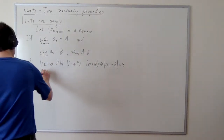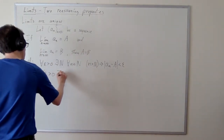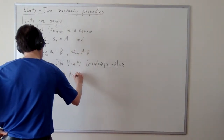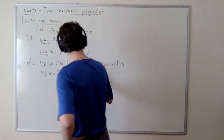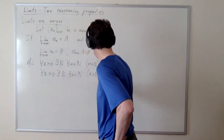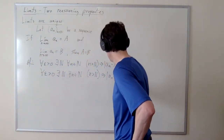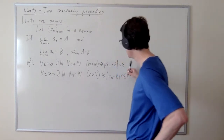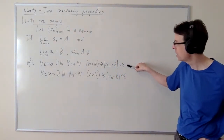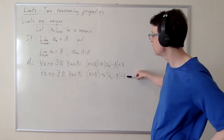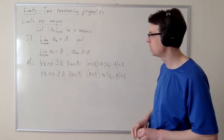We also know that for every positive epsilon, there exists a cap N such that for every n in the naturals, if n exceeds cap N, then |a_n − b| < epsilon. That's what we know when we say a_n converges to b. So somehow both of these might be true simultaneously.